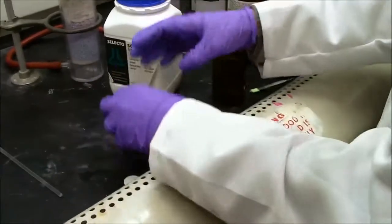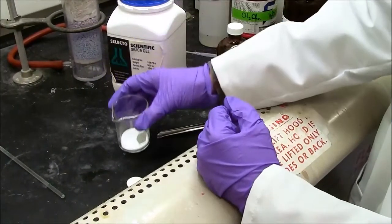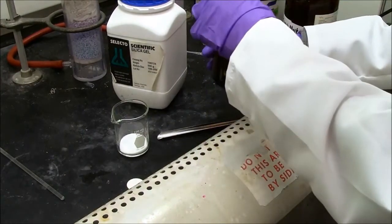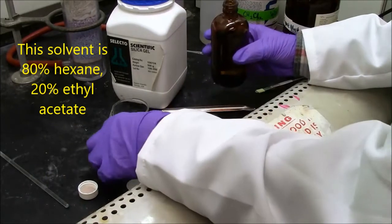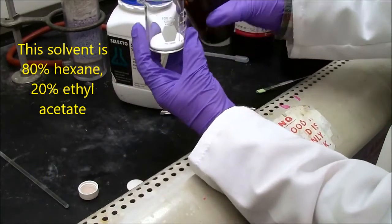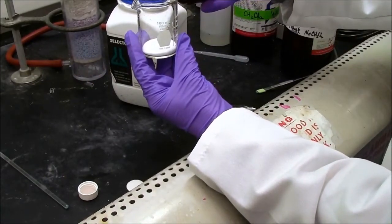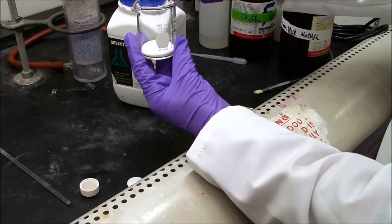We're now going to add the solvent, in this case it's 80% hexane, 20% ethyl acetate. We need to add enough so that all the silica will get wet, and a little bit of solvent left on top, but not a vast excess of solvent.